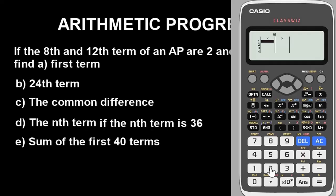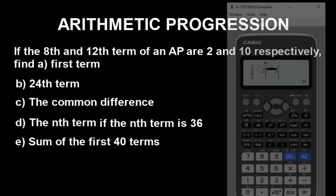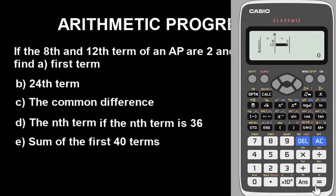Having done that, it brings you to the data entry screen. We have two terms: the 8th and 12th, so those are the x values. Enter 8, press equals to confirm, go down, enter 12 and confirm. Then move over to y — the y values are the values of the respective terms. The 8th term is 2 and the 12th term is 10. Enter them respectively. Once done, you can press AC — the values are already stored in the calculator.